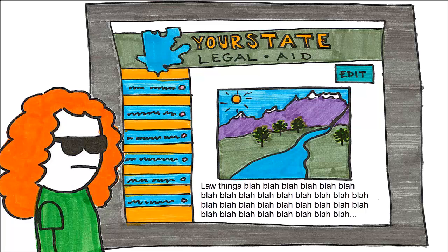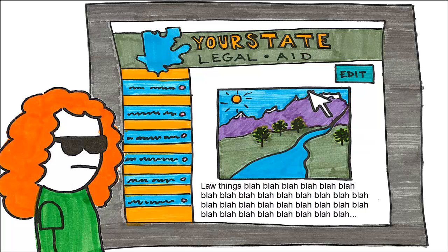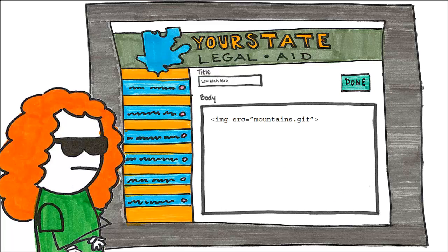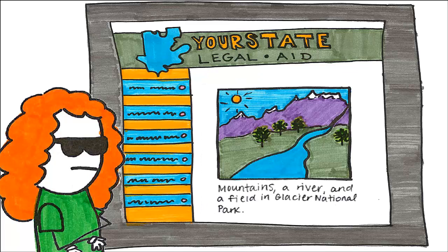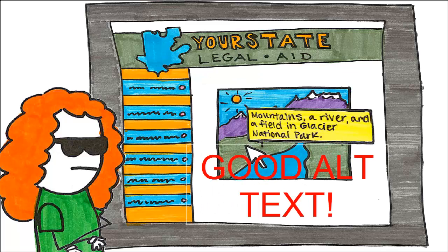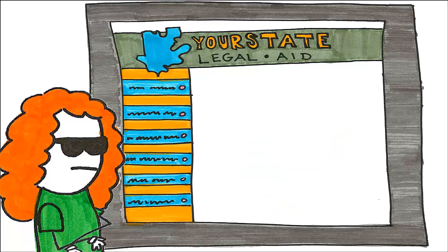For images, this means including descriptive alt text. Alt text is the little tag that appears when you hover your mouse over an image, and can be read by a screen reader. This is different from a caption. Making it descriptive means conveying whatever story the image tells in words.